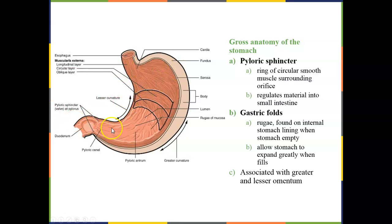Here you can see the sphincter and the duodenum of the small intestine. Small amounts of material move from the stomach into the small intestine at a time, which allows for better digestion and absorption of material.